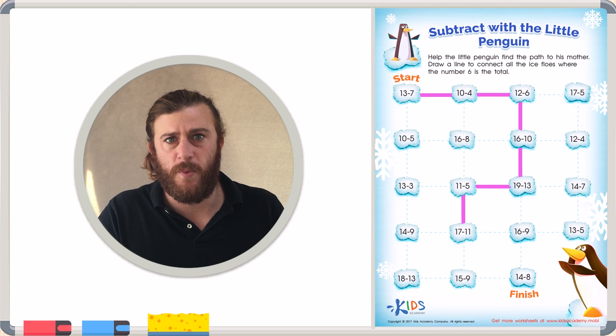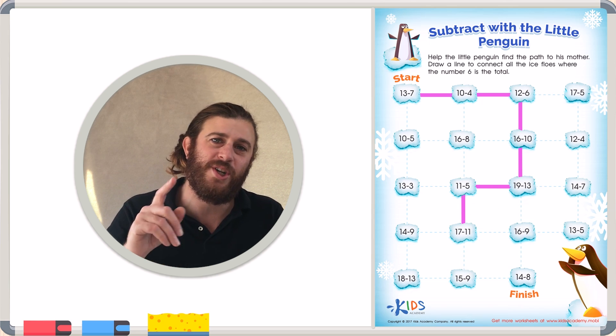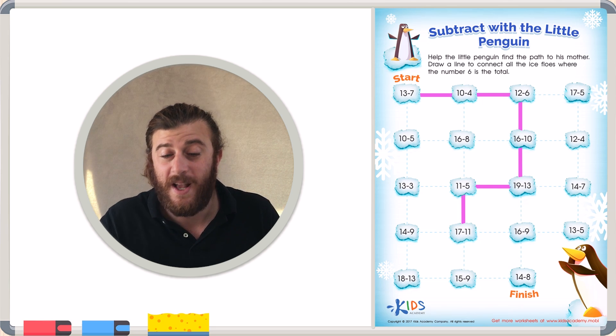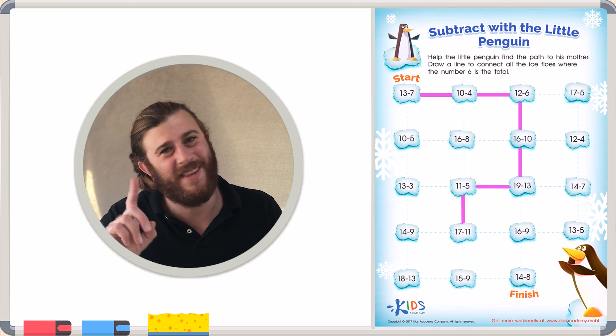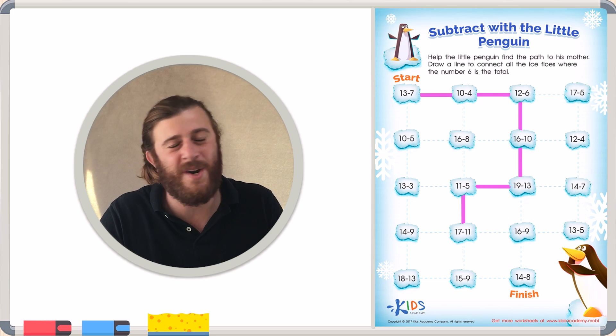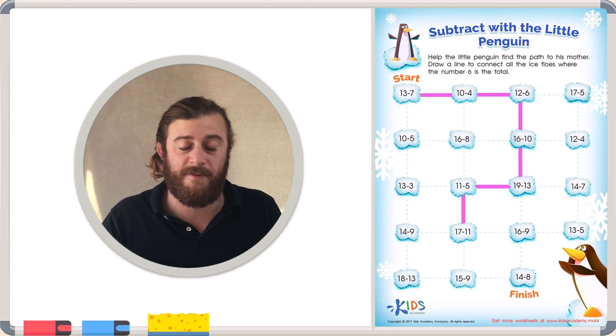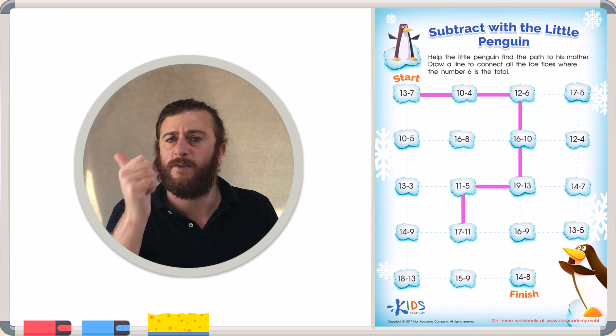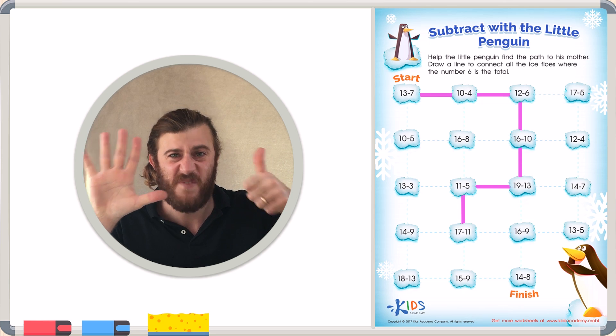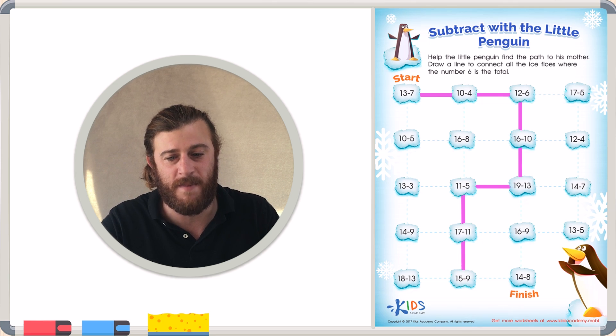So again, we have a few choices. We can draw a line to 14 minus 9, or we can draw a line to 16 minus 9, or we can draw a line to 15 minus 9. Which one do you think is going to equal 6? Well, I think 14 minus 9, that's not going to be enough. Those numbers are too close together. 16 minus 9, we already know those two numbers are too far away. So let's try 15 minus 9. Let's count backwards from 15 to 9. 15, 14, 13, 12, 11, 10, 9. 6 fingers again. Excellent job. Let's draw a line to 15 minus 9 because 15 minus 9 equals 6.